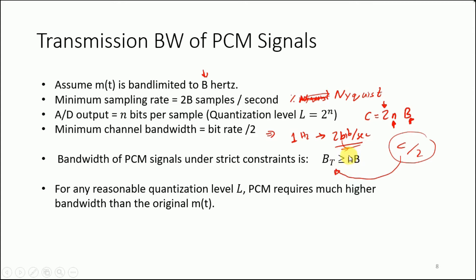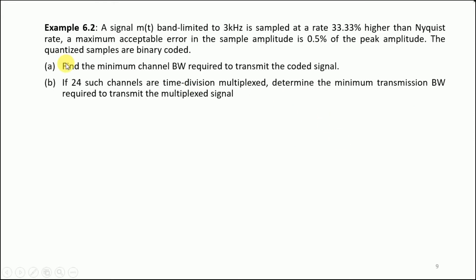Let us look into one example. This example is taken from the textbook by Lathi and says that a signal M(t) is bandlimited to 3 kilohertz, so we can say that the bandwidth of the message signal is simply 3 kilohertz.